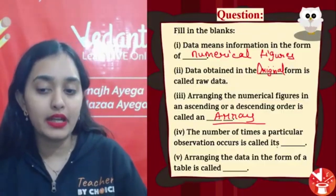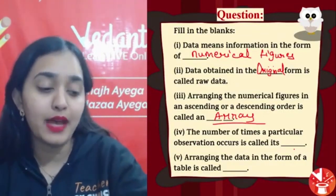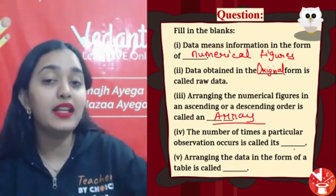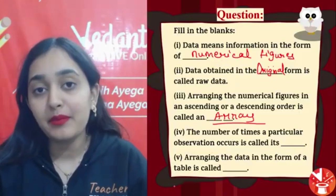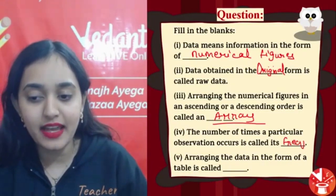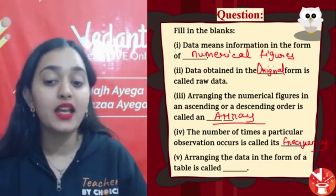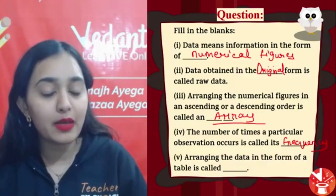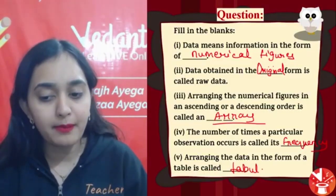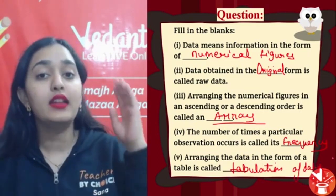Number of times a particular observation occurs is called its frequency. In the tally table we counted how many times a data repeated — that is frequency. Last: arranging data in the form of a table is called tabulation of data — arranging data in table form is tabulation.